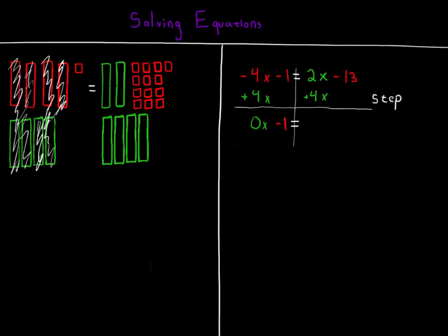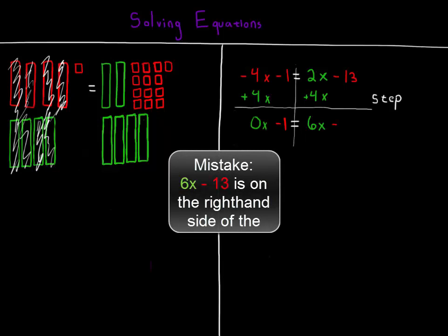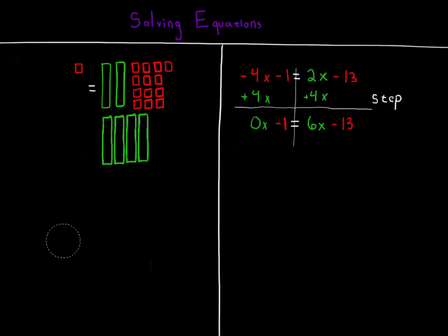On the right-hand side, nothing cancels. But instead, the 2x and the 4x are added together for a total of 6. The negative 13 remain, so on the left-hand side of the equation, we have 6x minus 13. Notice how what's left of our model matches what we've written in our equation exactly.